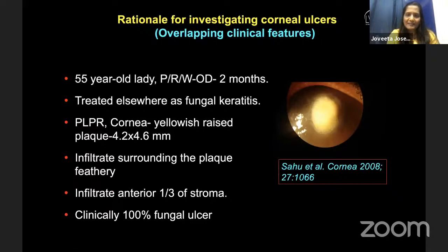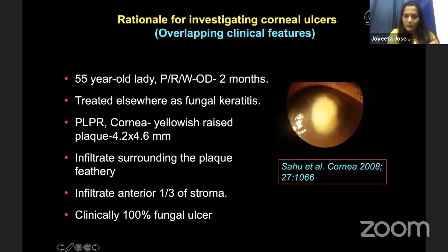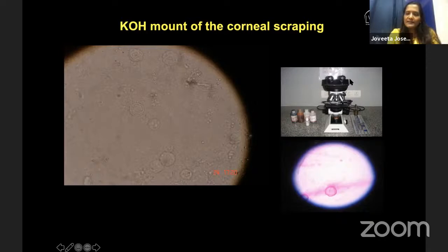To explain why we need such a broad microbiological workup — here is an example. A 55-year-old lady presented with pain, redness, and watering for two months. It was treated elsewhere as fungal keratitis. Clinically, the cornea showed a yellowish raised plaque with a feathery infiltrate surrounding it — very typical of a fungal ulcer. But when we took a scraping and placed it on a slide with simple KOH mount, we could see double-walled cysts of acanthamoeba, and the same thing was seen on gram stain.